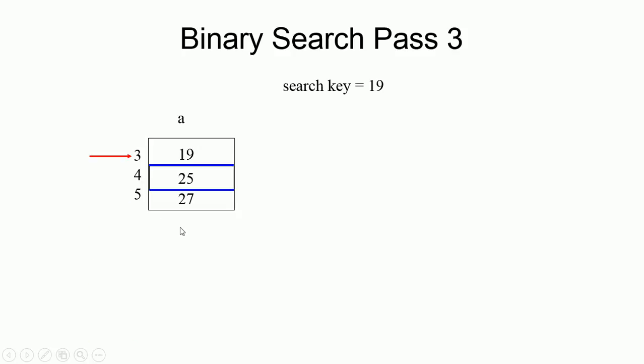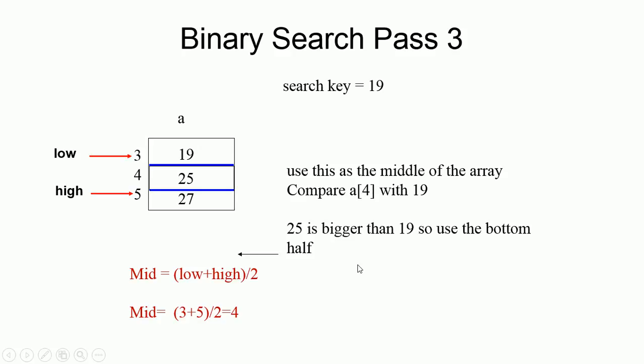Once again, repeat. Same thing. Here, low. Here, high. I have to find the mid value. Mid equal to low plus high divided by 2. That becomes what? 4. This is 4. Once again, compare that value, 25, with what? 19. Is it equal? No. 25 less than 19? No. 25 greater than 19? Yes.